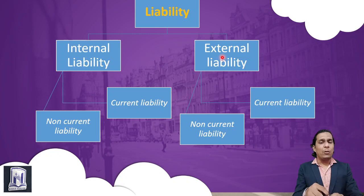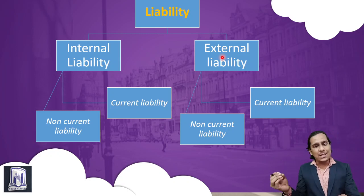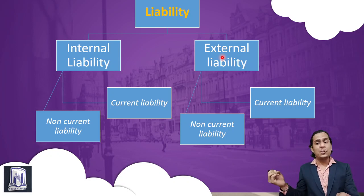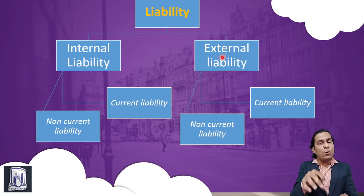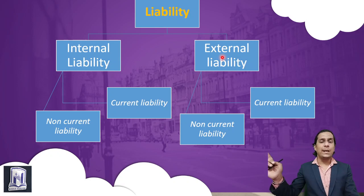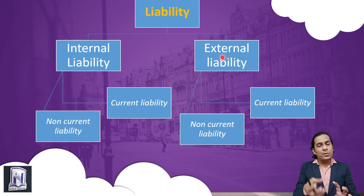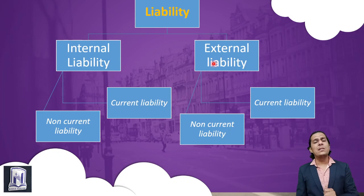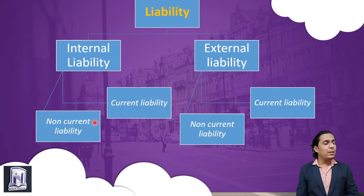External liability is when the business owes money not to the owner but to someone else — such as a bank from which you took a loan, a supplier from whom you purchased goods on credit, or any person whose services you availed on credit, or any expense still to be paid. That karza which the business has to pay to a third party is called external liability.